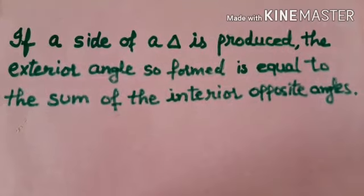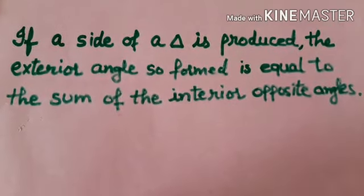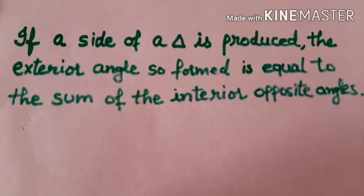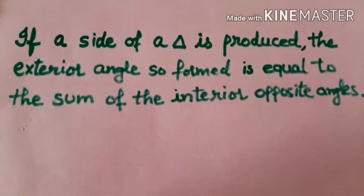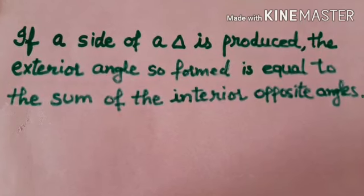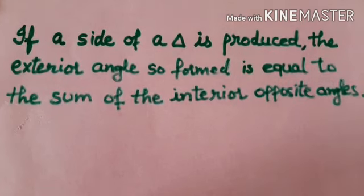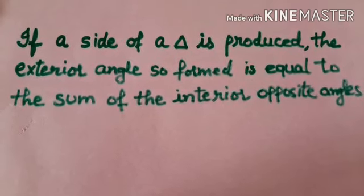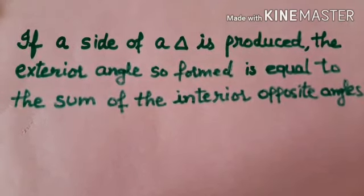The definition of the exterior angle property is: if a side of a triangle is produced, the exterior angle so formed is equal to the sum of the interior opposite angles. By paper cutting, we will understand interior angles, exterior angles, and prove the exterior angle property of the triangle.